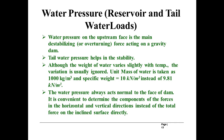Water pressure on the upstream face is the main destabilizing or overturning force acting on a gravity dam. Tailwater pressure helps in the stability. Although the weight of the water varies slightly with temperature, the variation is usually ignored. The unit mass of water is taken as 1000 kg per cubic meter, and the specific weight or unit weight is taken as 10 kN per cubic meter instead of 9.81 kN per cubic meter.